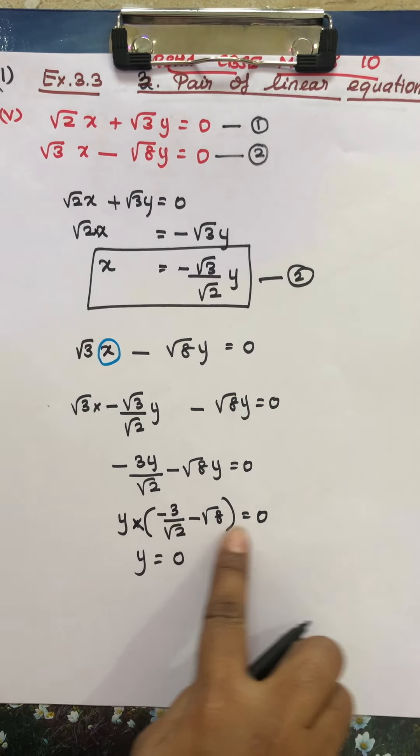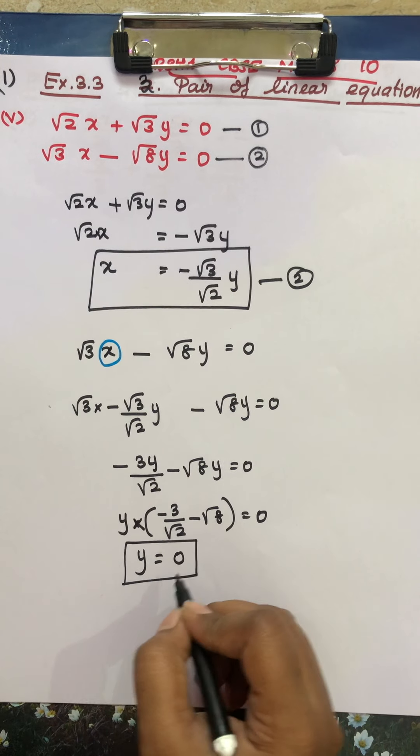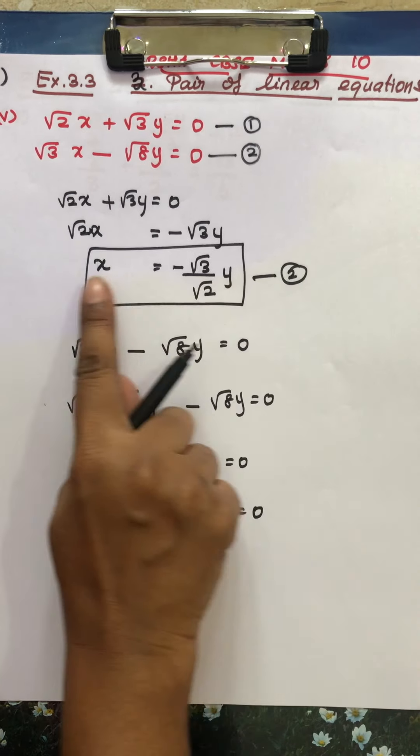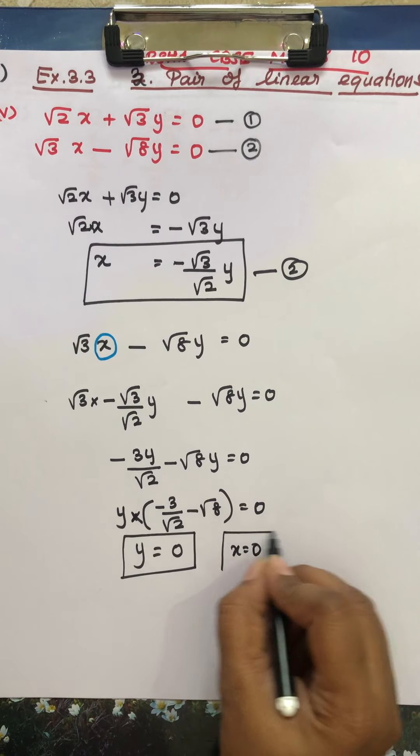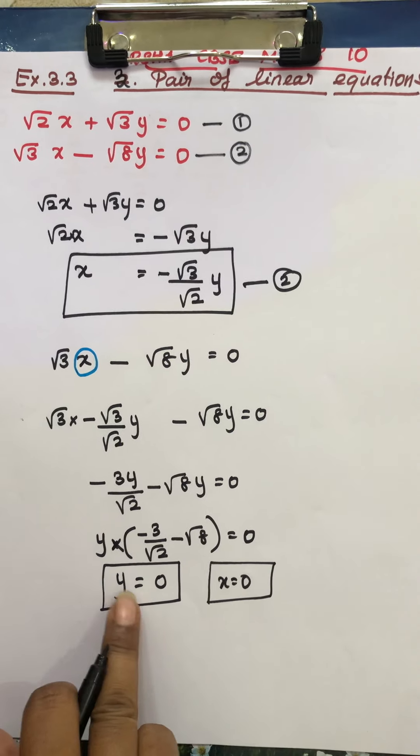So what answer is, we find 0. So y is 0. Y is 3 by root 2, so x is also 0. x is 0, y is 0.